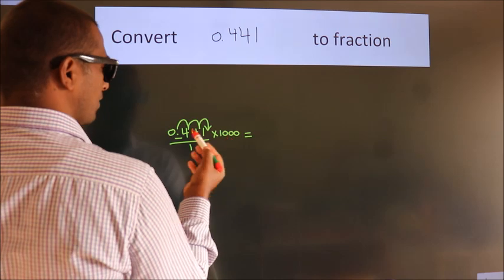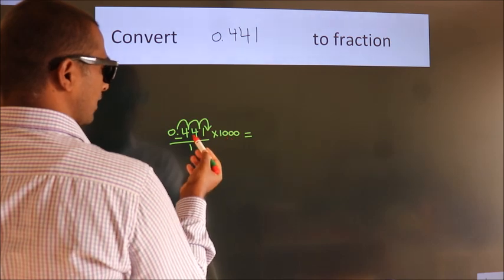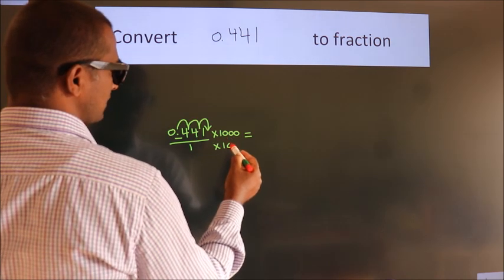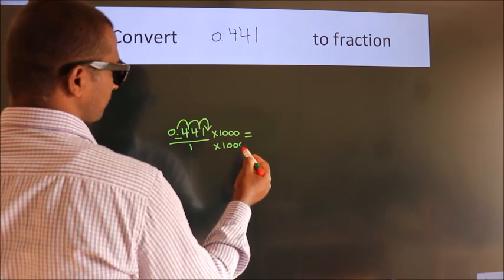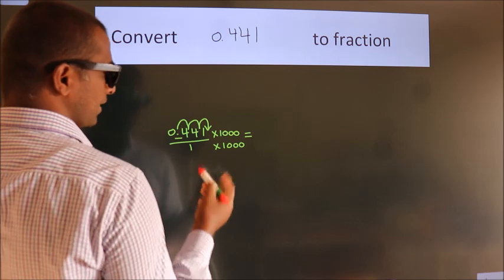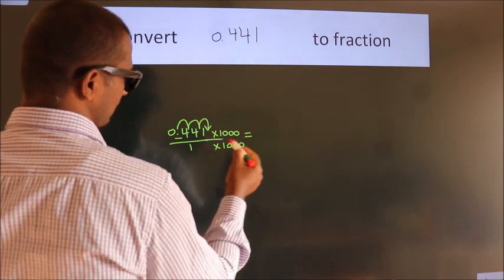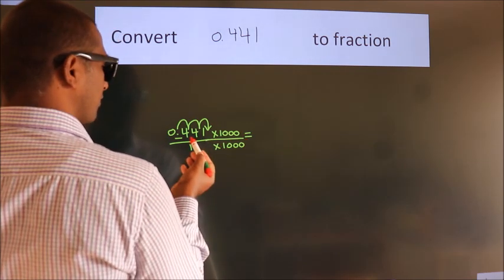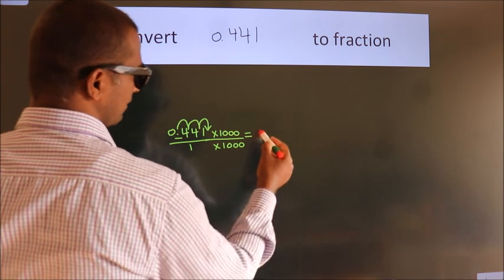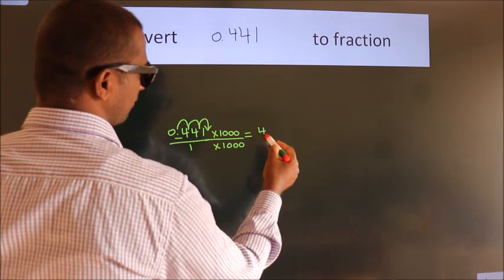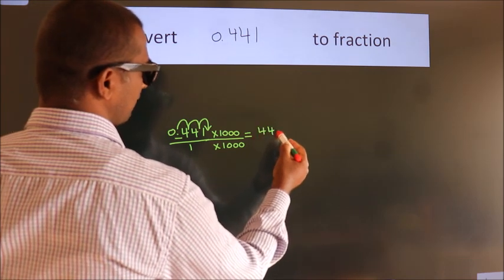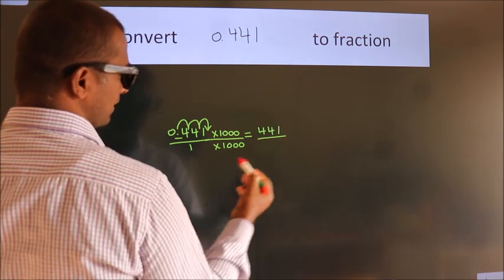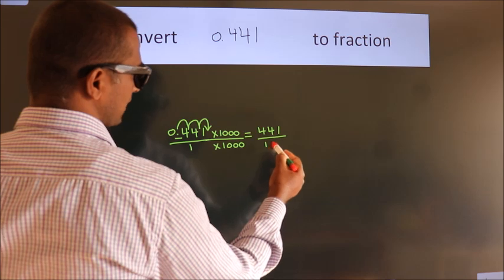Whatever you are multiplying in the numerator, in the denominator also do the same. So 0.441 multiplied by 1000 gives 441, and 1 multiplied by 1000 gives 1000.